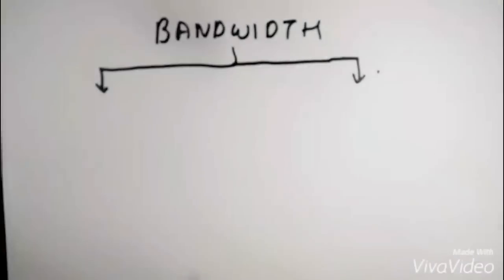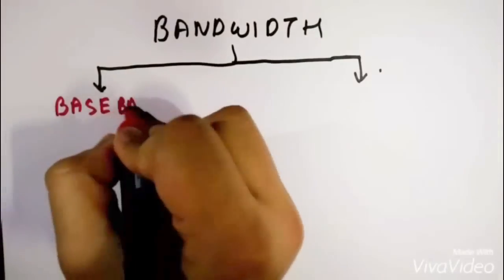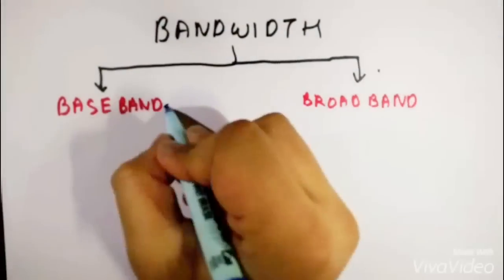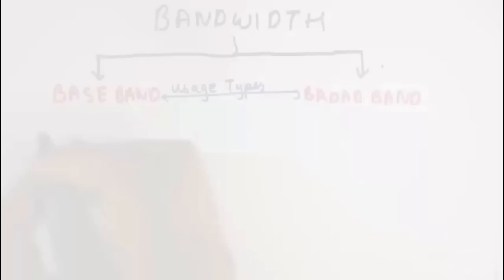The electromagnetic band in the bandwidth can be used in two different ways, namely baseband and broadband. You may have heard these terms but what do they mean?